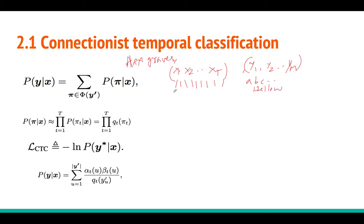You want to build a model that takes the input sequence and produces the output. You could use a recurrent neural network — back in 2014 or 2015, sequence-to-sequence models were not available, so they only had LSTMs. Given inputs x1, x2, ..., xT to the LSTM, it has to predict y1, y2, ..., yM. But with just a single LSTM and no sequence-to-sequence framework, this is not directly possible because the length T of the input and the length M of the output are not the same.